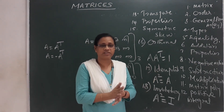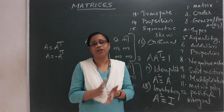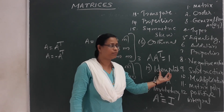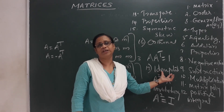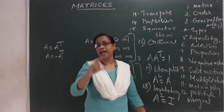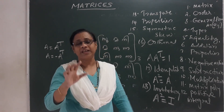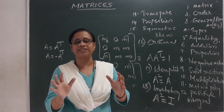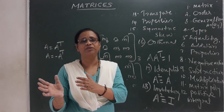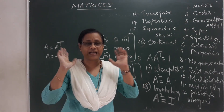Idempotent matrix: A squared is equal to A. We call it the idempotent matrix. Involutary matrix: A squared is equal to I. This is such a matrix. It makes the matrix math easier to recollect.